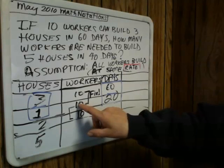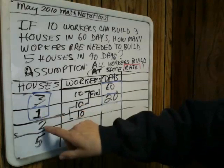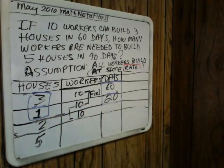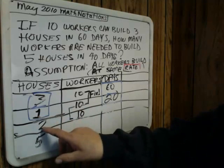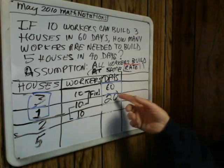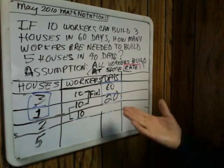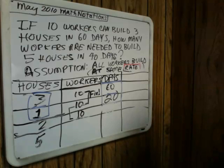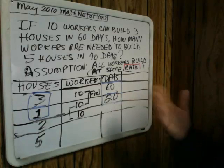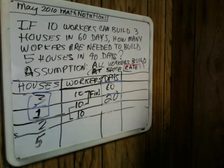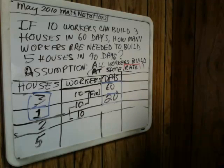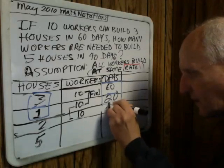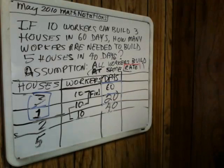Now we're going to keep the number of workers fixed but double the number of houses. If we double the number of houses, what happens to the number of days? Ask the qualitative question first if you think it's useful, or go right to the numerical: more than 20, less than 20? By this point, we would expect all students to say more than 20, and many students — particularly those who struggled with the first question — would be able to say 40 without a formal procedure. Double the number of houses, double the number of days.